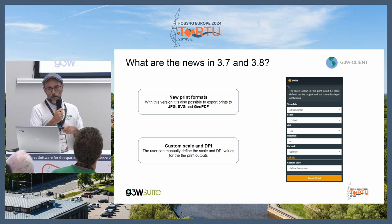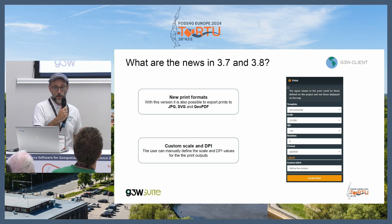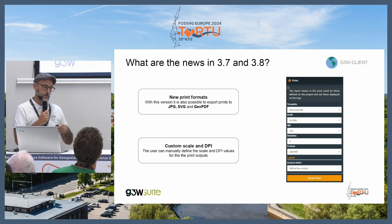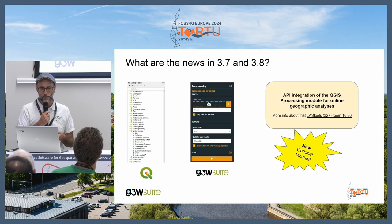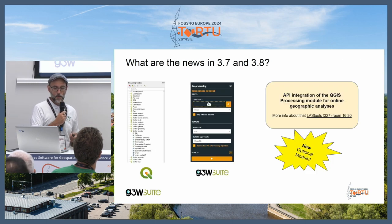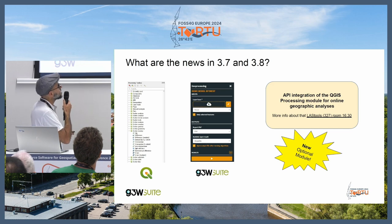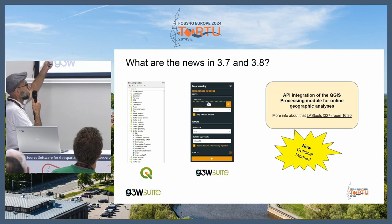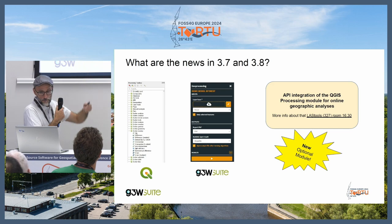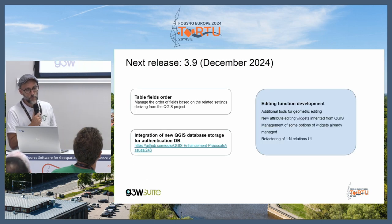Regarding print layout, it is now possible to export prints in JPG, SVG, and GeoPDF formats, and to specify the scale and DPI of the download. We have also developed a module for integration of QGIS Processing inside GTW Suite. It will be possible to create your model inside QGIS Desktop and add that same model inside GTW Client and GTW Admin.